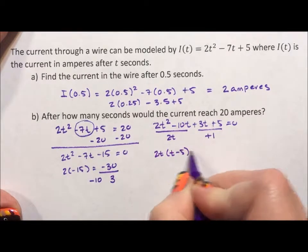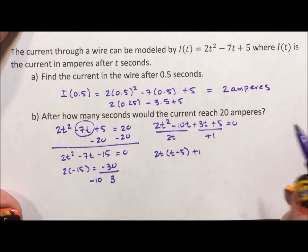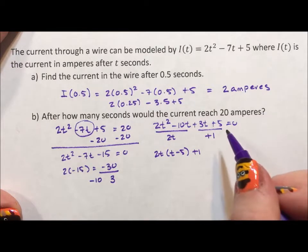2t times t minus 5 plus 1 times... uh-oh, where did things go wrong?